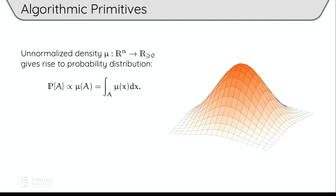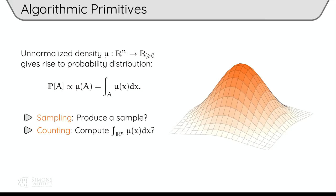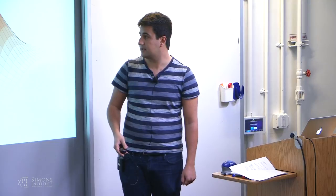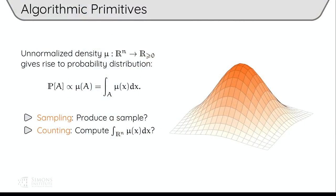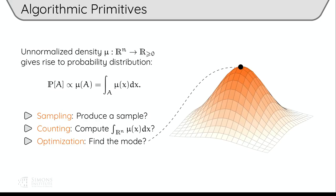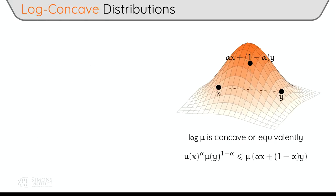There are generally three algorithmic things we want to do with distributions. The obvious one is to sample from them — you have an unnormalized density given by an oracle and want to produce a sample. Very related to sampling is computing the partition function; in the continuous case, that's integrating the function over the entire space to normalize your distribution. There are very general reductions between these two. I'm also going to talk about optimization, meaning finding the mode of the distribution.